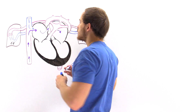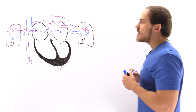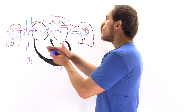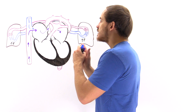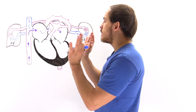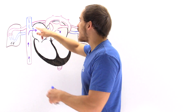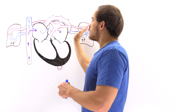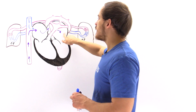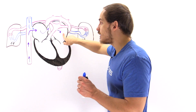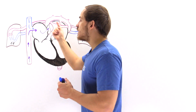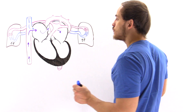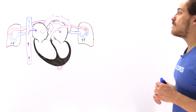What exactly is the foramen ovale? In the developing fetus, the wall separating the two atria contains a one-way valve system. Because of the higher pressure on the right side, it pushes against this foramen ovale valve, which pops open and the blood flows into the left atrium. As a result, the partially oxygenated blood is able to bypass those non-functional, high-pressure lungs.